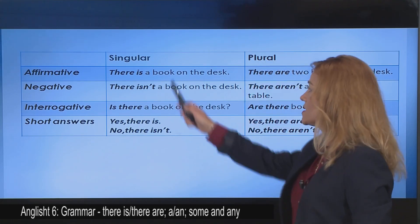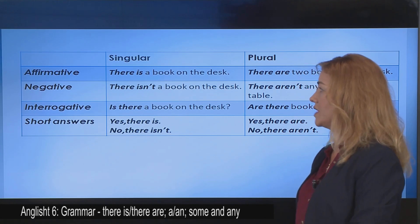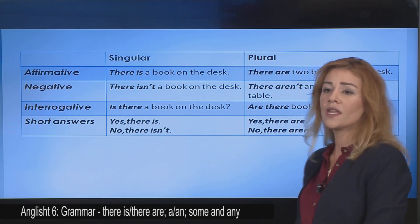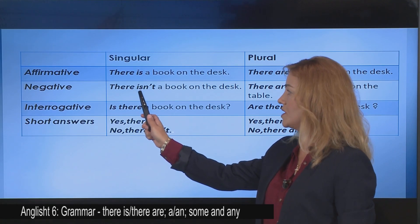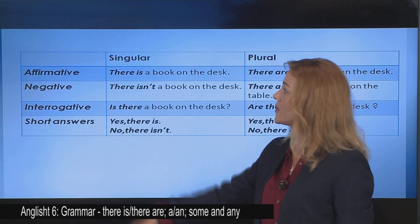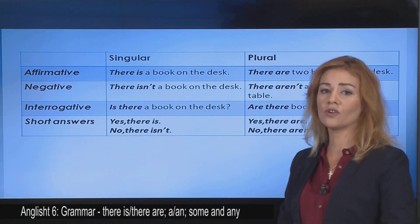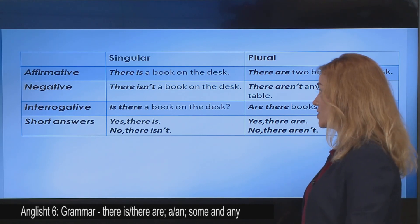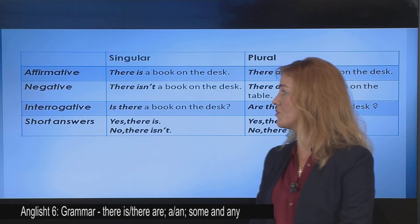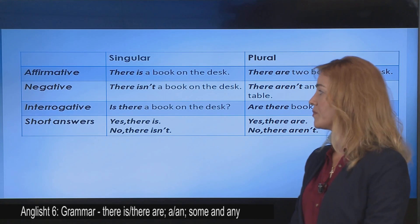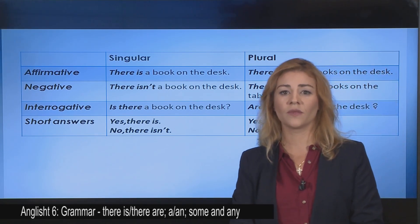Let's see. Singular affirmative: There is a book on the desk. Negative — how do we form the negative? We put not after the is verb: There isn't a book on the desk. And interrogative: Is there a book on the desk? So we put the verb is before there. Short answers: Yes, there is. No, there isn't.